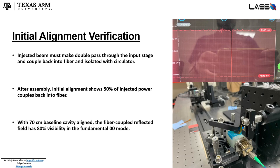Once these first-generation prototypes were assembled, one of the first alignment challenges we ran into was mounting the fiber collimator onto the front of the input stage. The injected beam must make a double pass through the input stage as it reflects off of that first cavity mirror, and that reflected beam must couple back through the collimator into the fiber, where we then pick off that reflection with a circulator and measure it on a photodiode for Pound-Drever-Hall locking.